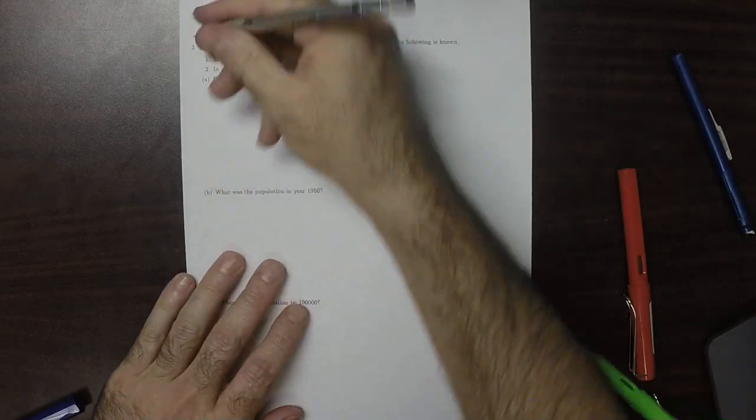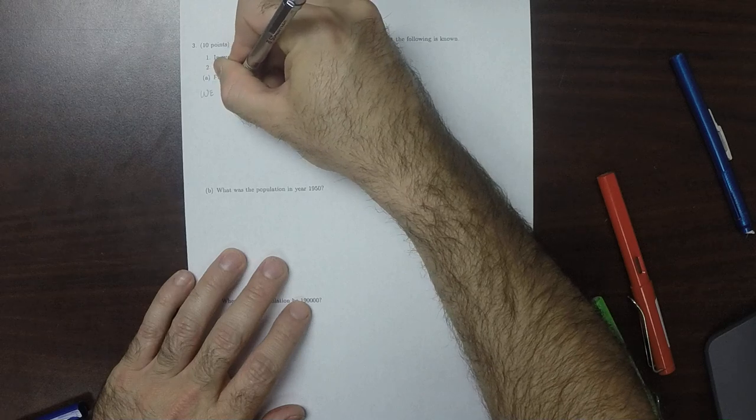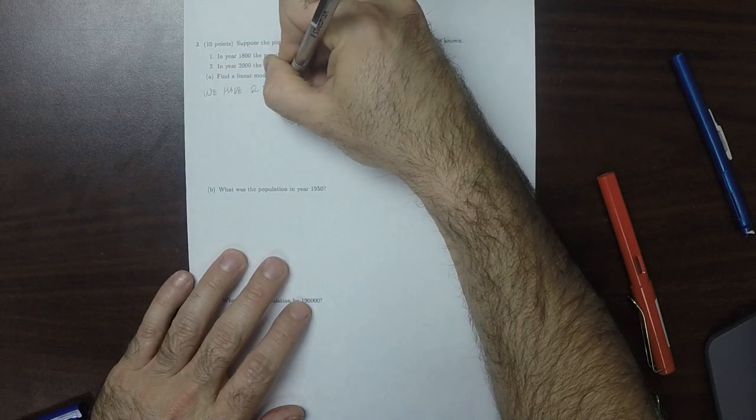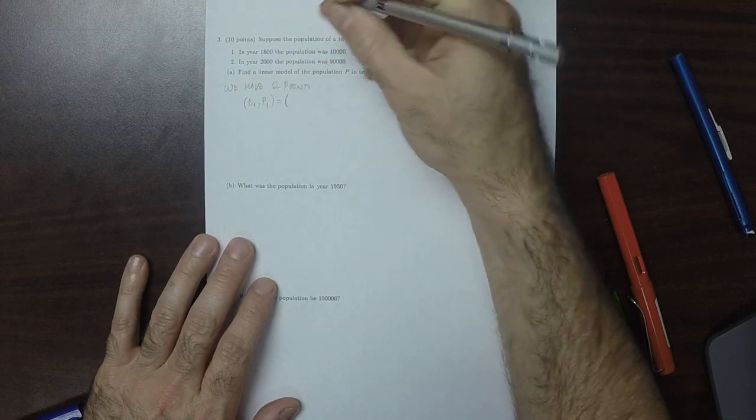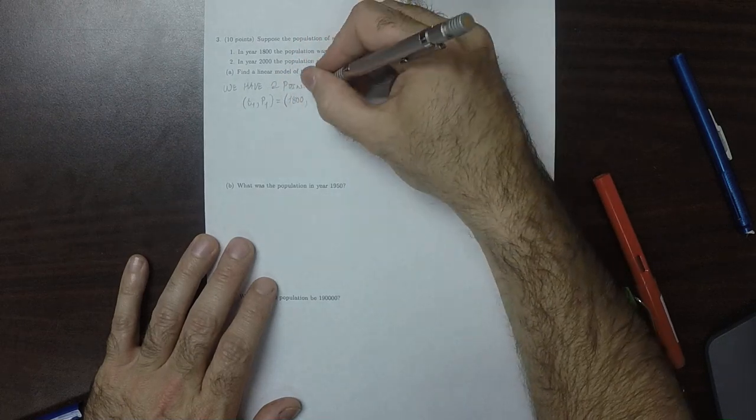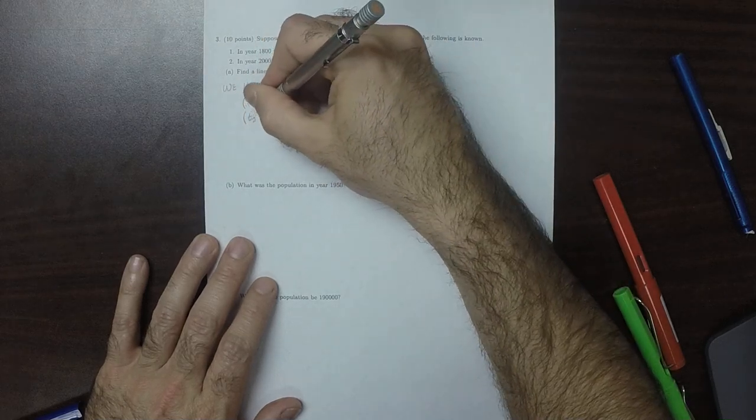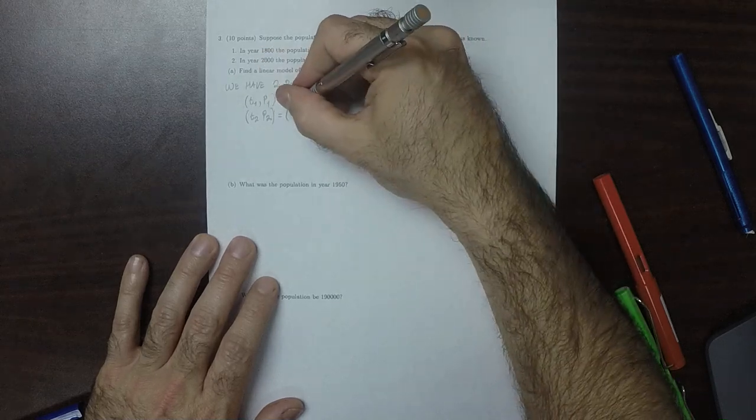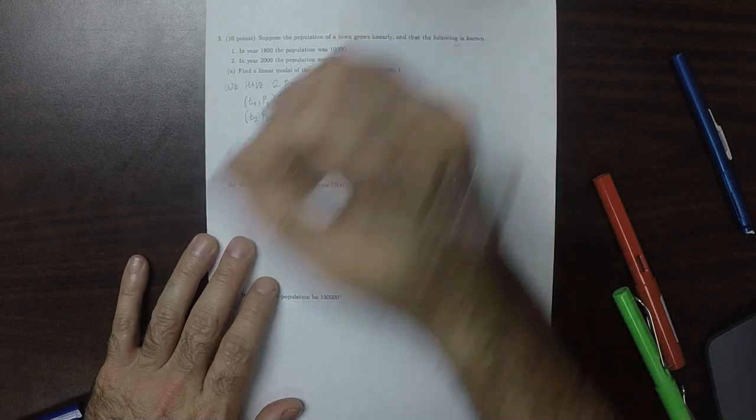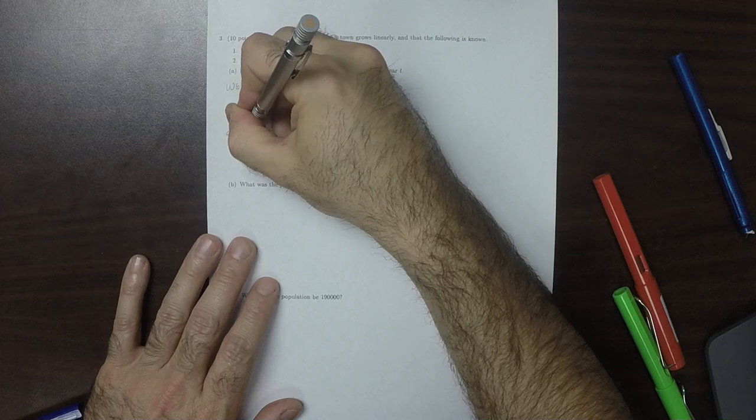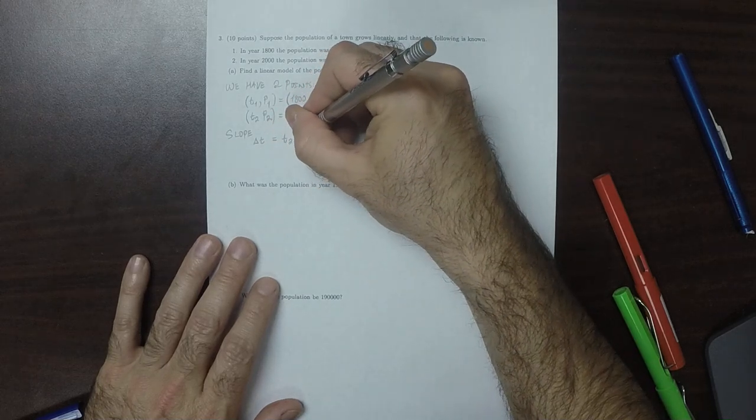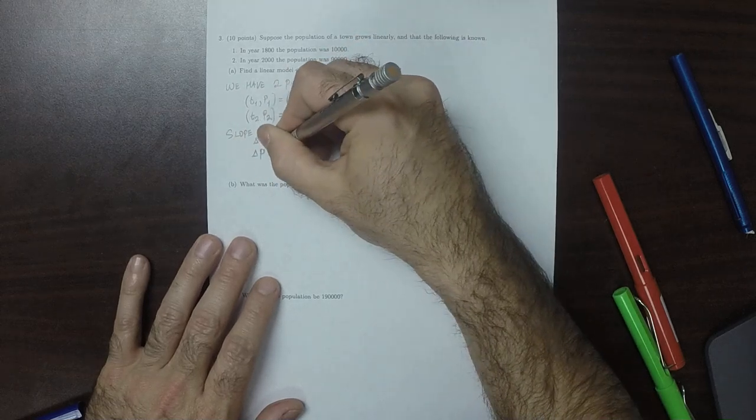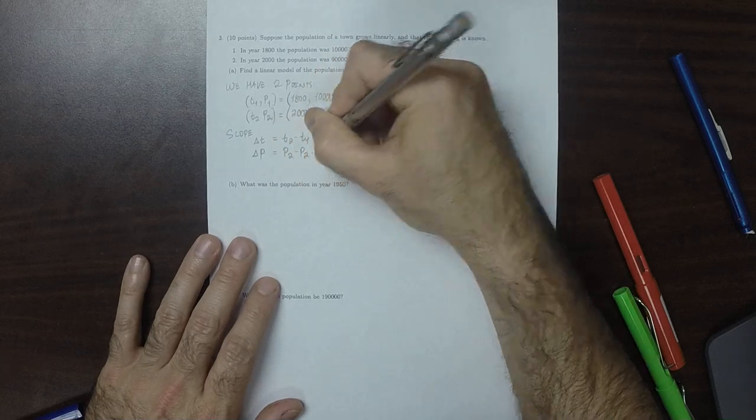And then part three. Find a linear model. We have two points. The two points are T1, P1 equal to 1800, 10,000. And T2, P2 equal to 2000, 90,000. So we need to find the slope. So delta T, the change in T, that's the difference in the T's. T2 minus T1, which I can see is 200. And delta P is the difference in the P's, which is 80,000.